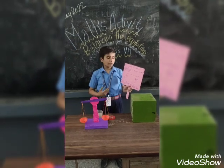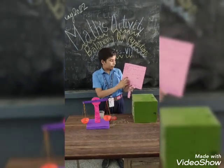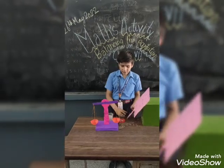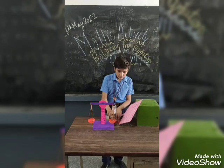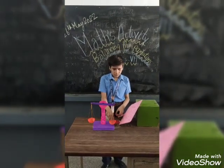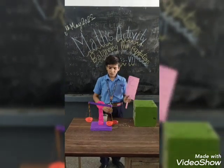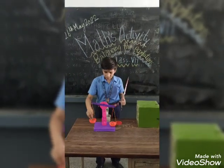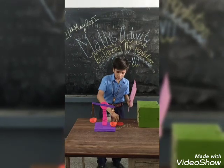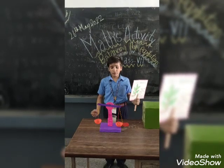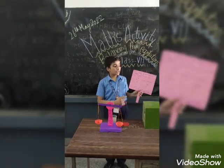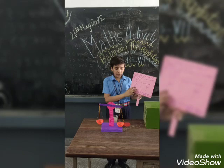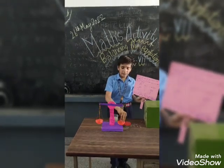Now we have to balance the equation. We will solve the left hand side: x minus 2. We know the value of x is 7, so we will put 7 wheels in the left hand side pan and 5 wheels in the right hand side pan. The weight is not balanced because our equation is incomplete — we have to minus 2 wheels, so we will remove 2 weights from the left hand side.